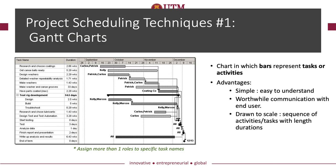The Gantt Chart is the first technique used to visualize the project scheduling. Basically, the Gantt Chart is the best tool for effective project and time management. It is simple and easy to represent tasks and sub-tasks visually on a graph or a chart.